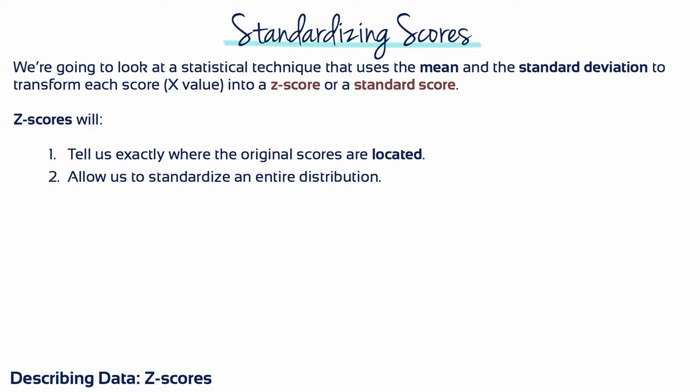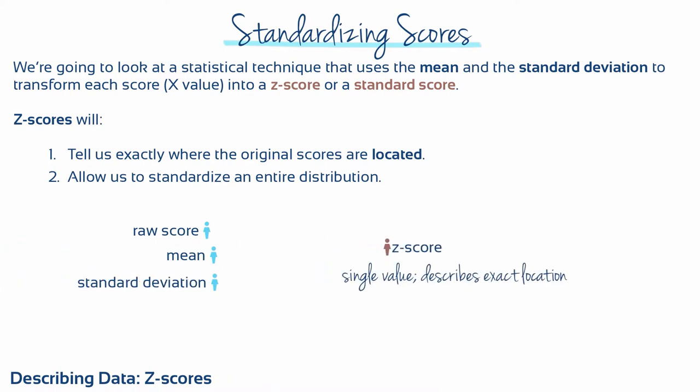It would be useful to have a statistical technique that can identify and describe the exact location of every score in a distribution. The z-score combines the raw score, the mean, and the standard deviation into a single number that precisely describes an exact location relative to the other scores in the distribution.